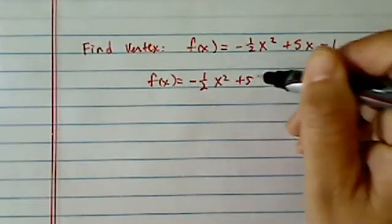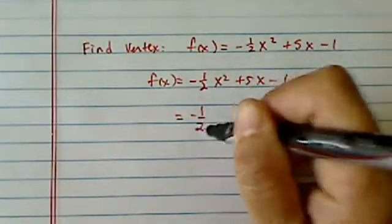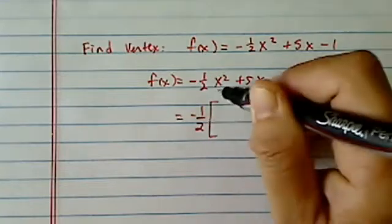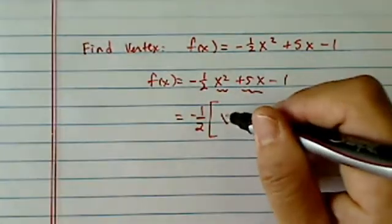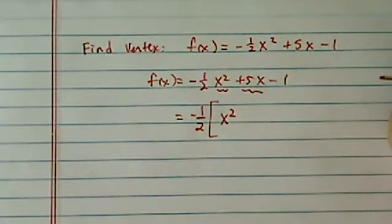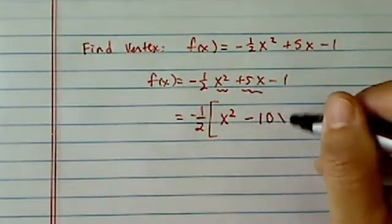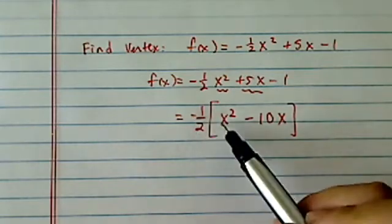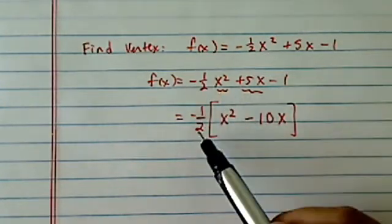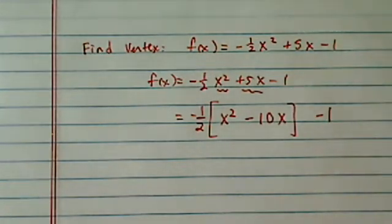Let's copy this one first. We're going to pull the coefficient out of the first two terms — you'll see why. x squared is left inside for the first term, and then it's minus 10x. The way you check it is you're going to multiply this out; you should get the first term. When you multiply those two out, you should get a positive 5. We're going to leave the minus 1 over here.